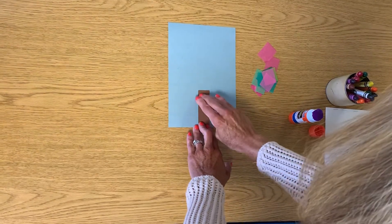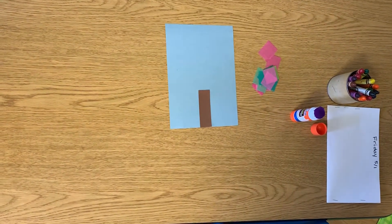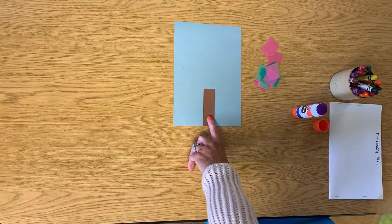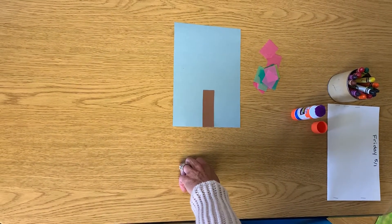This is going to be, remember I said, a blossoming spring tree. So what part of the tree do you think this is? It's the trunk. Yes.